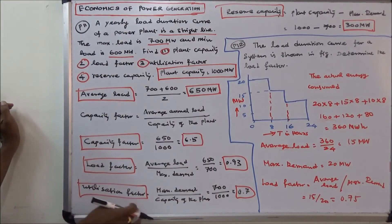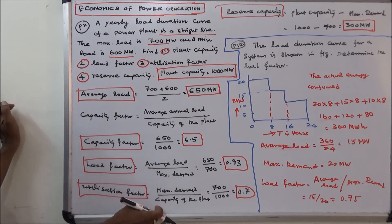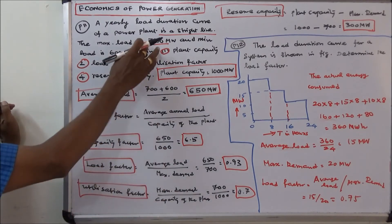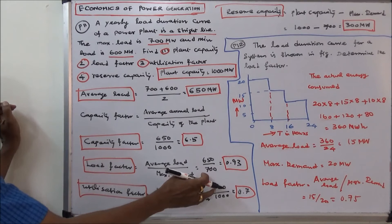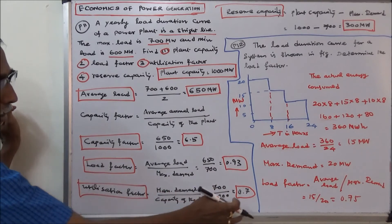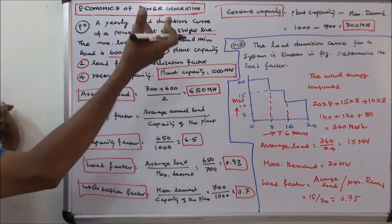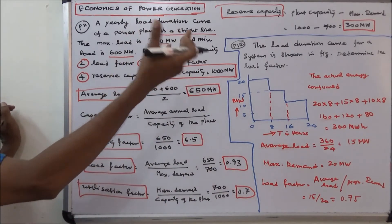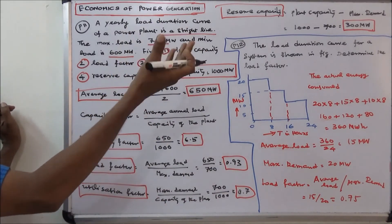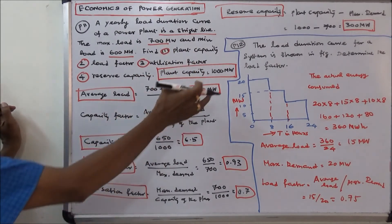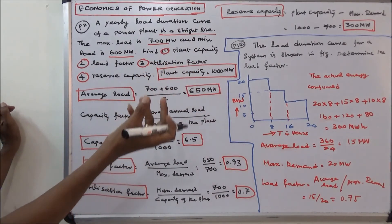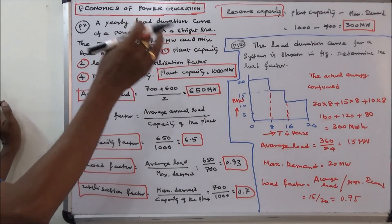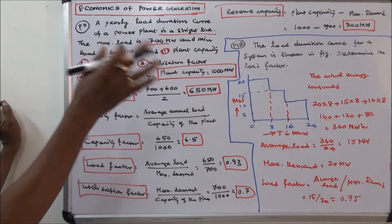Utilization factor equals maximum demand divided by plant capacity: 700 divided by 1000 equals 0.7. Reserve capacity equals plant capacity minus maximum demand: 1000 minus 700 equals 300 megawatts.